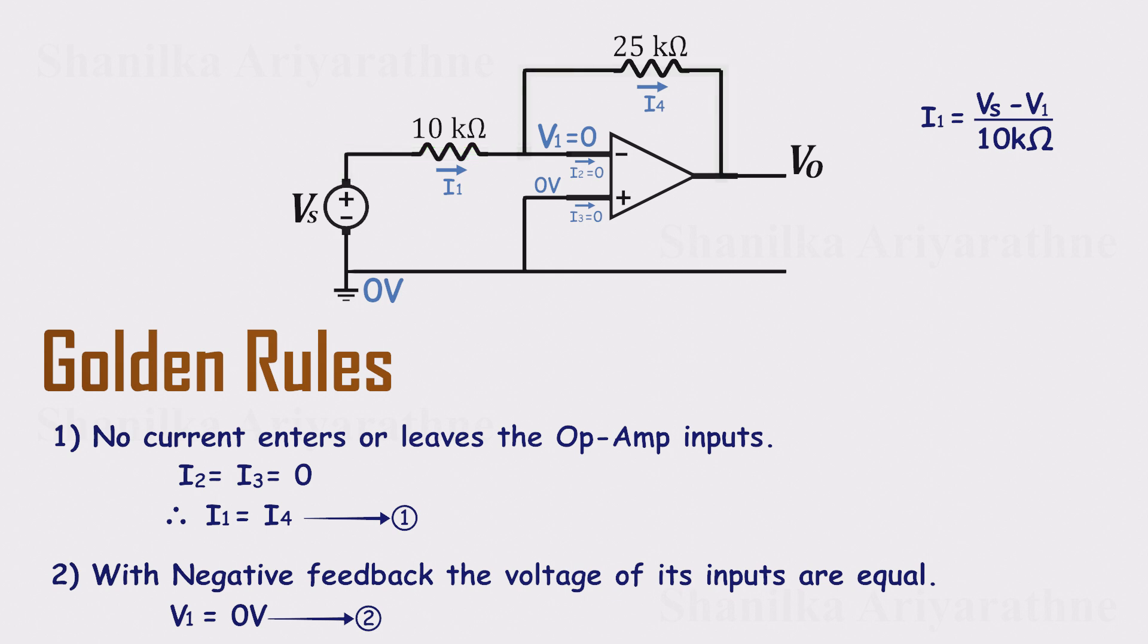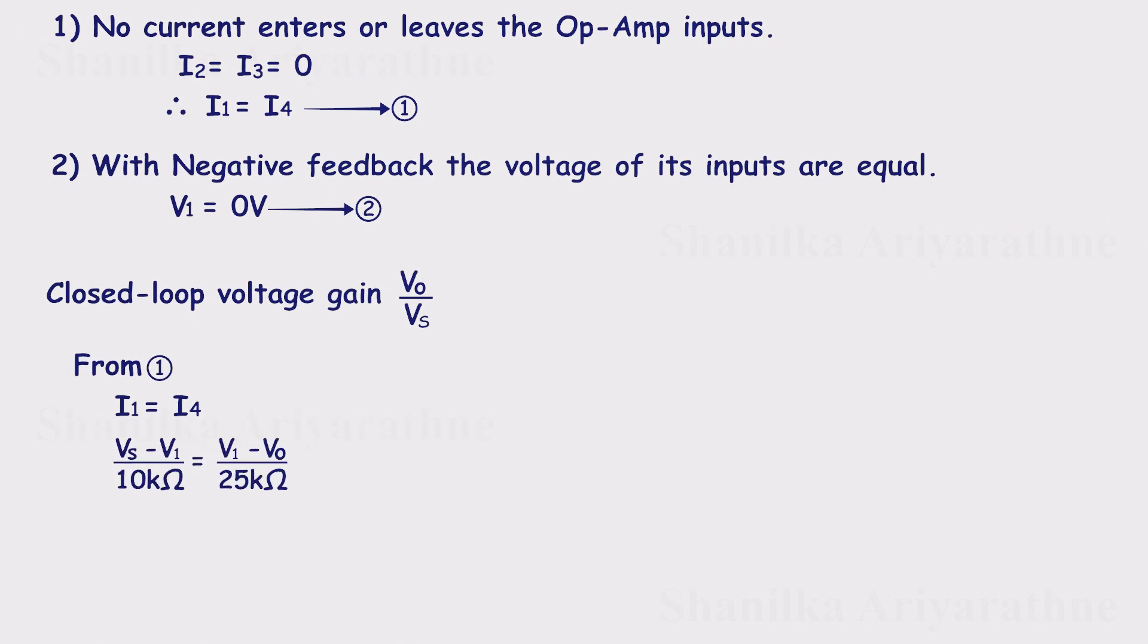For I4, the current through the 25k feedback resistor, it's V1 minus Vout over 25k. Since I1 and I4 are equal, we set those two expressions equal to each other. Simplifying gives us a third relationship.